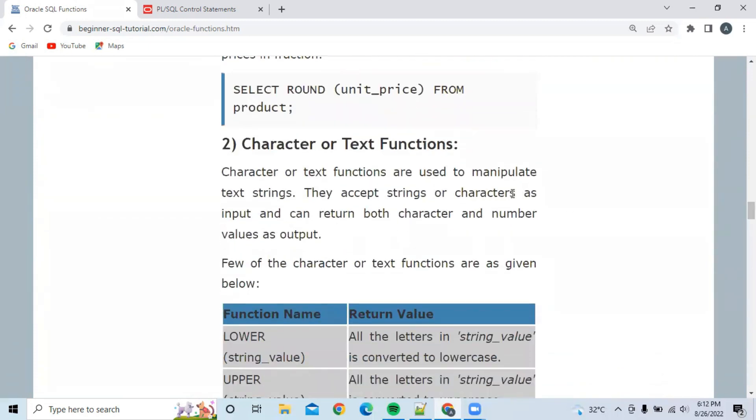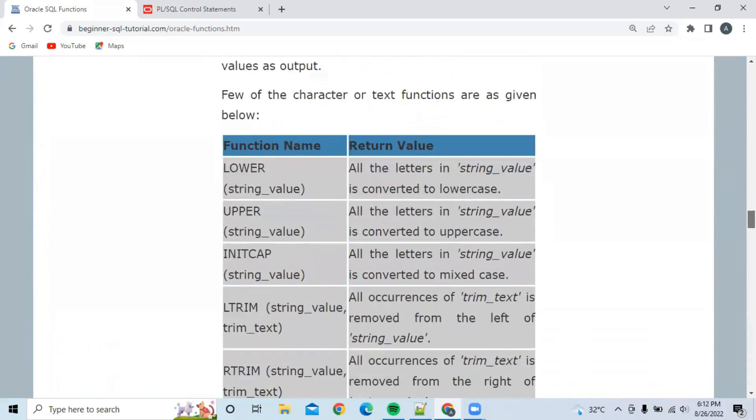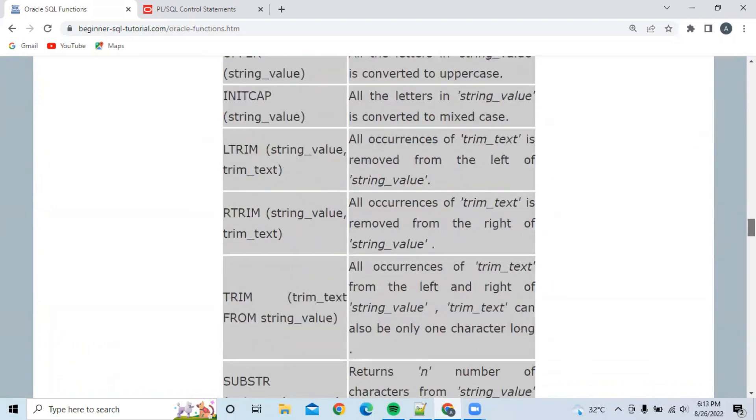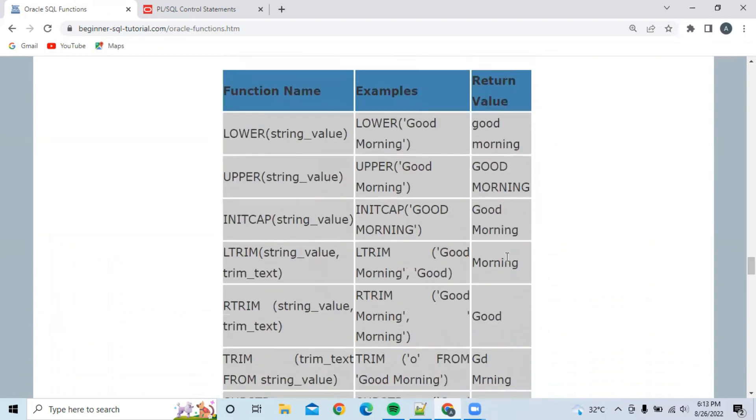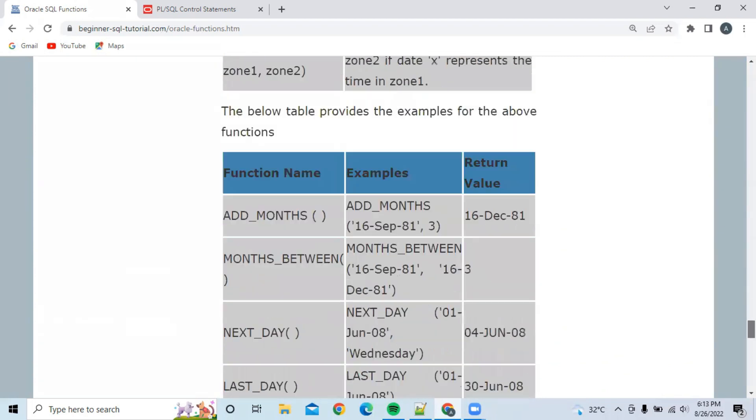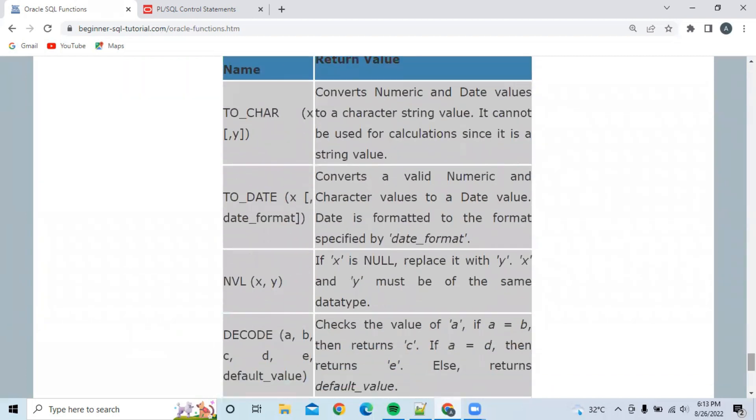If you go down, you can see they have given different character functions like INITCAP, LTRIM, RTRIM, and TRIM. They have given different outputs for these functions - for LTRIM, if you apply 'Good Morning', what will be the output? For TRIM, if you apply this text, what will be the output? You have to study each and everything including date functions. Please go through these one by one.